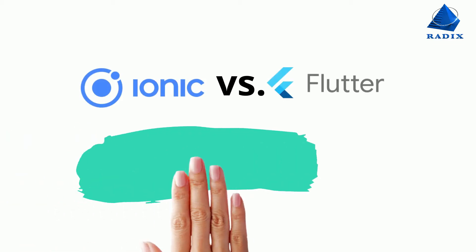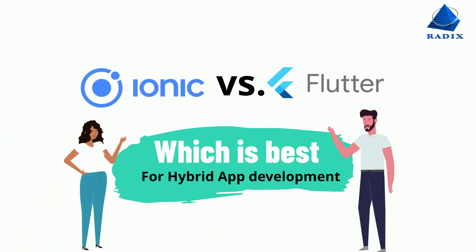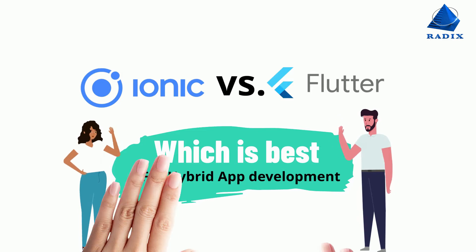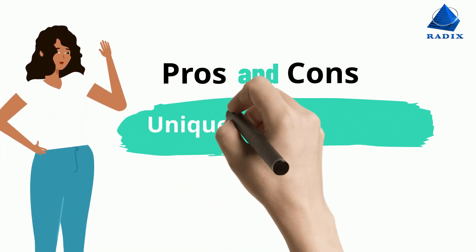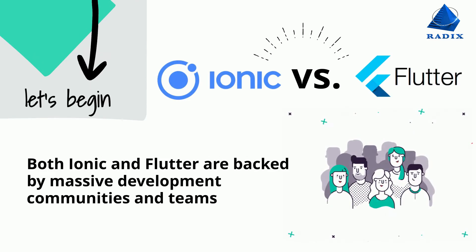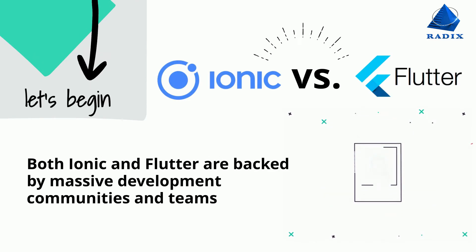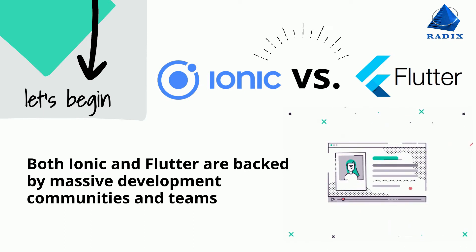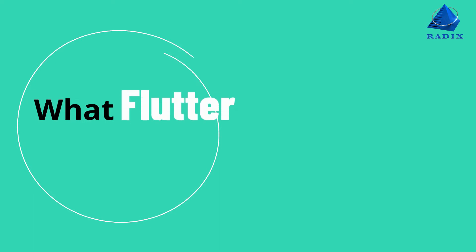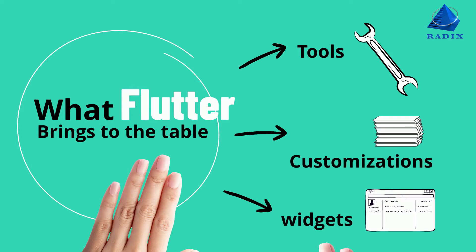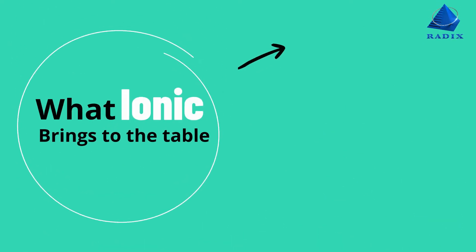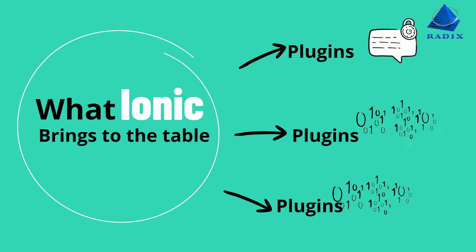It is tough to choose a new hybrid framework with the desired functionalities while not going over budget. Every upcoming technology has its pros and cons and unique functionalities to offer, and it's tricky business choosing among them. Both Ionic and Flutter are popular hybrid frameworks backed by a massive development team. While Flutter has a brilliant set of integrated tools, customizations, and inbuilt widgets, Ionic offers myriads of plugins to boost the process of development. While both frameworks are viable options, there are some unique pros of Flutter and Ionic.